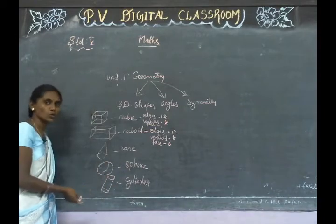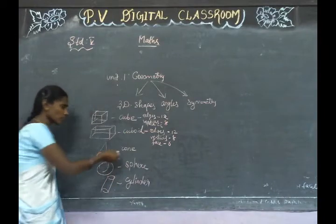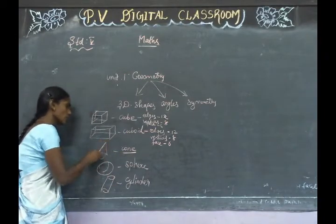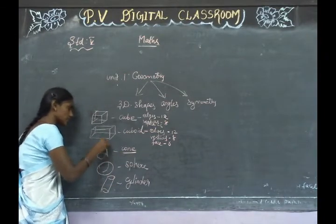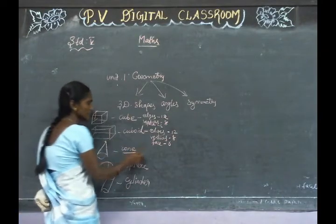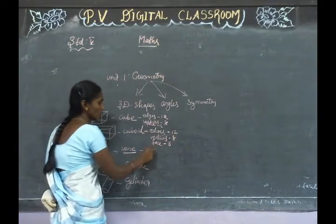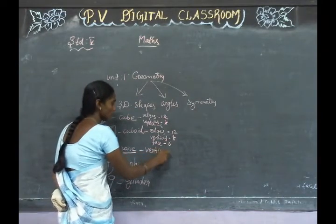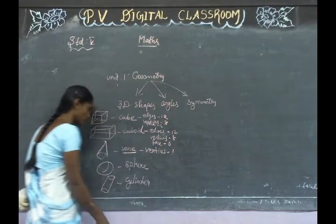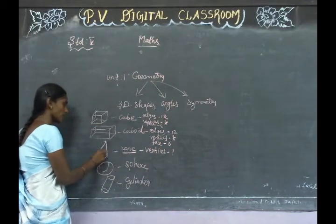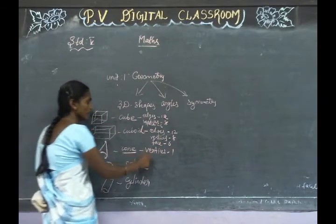Next one is cone. For cone, we have one curved surface and one plane surface.